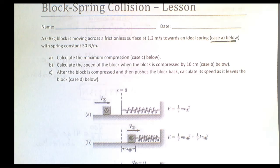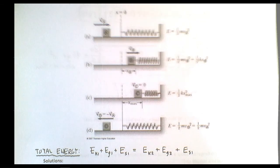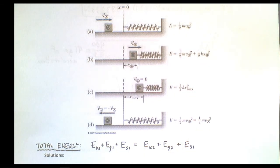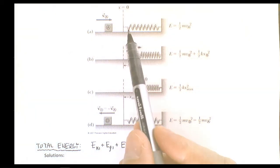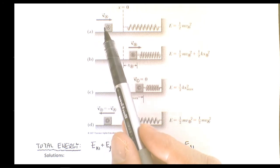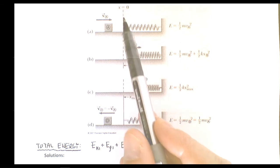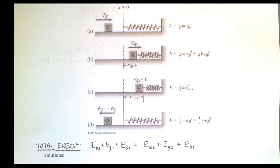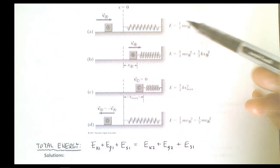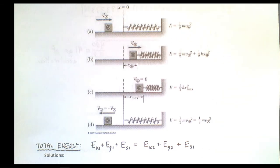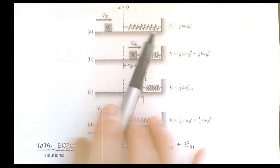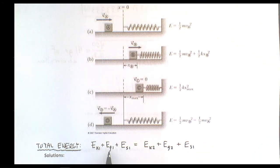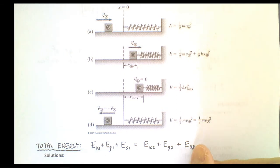Looking at the situation: in case A, you have a block with a specific mass and velocity hitting the spring. x = 0 is the equilibrium position. The energy of the system is entirely kinetic at that point. The total energy equation for the system is: EK1 + Eg1 + Es1 = EK2 + Eg2 + Es2.